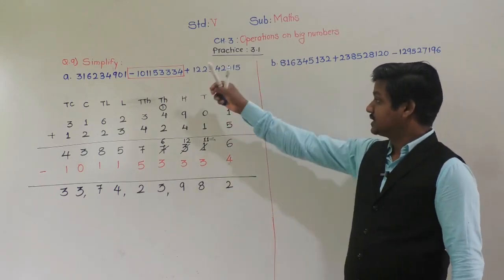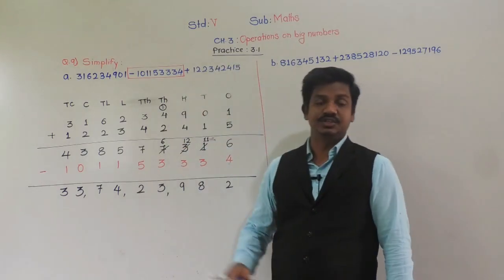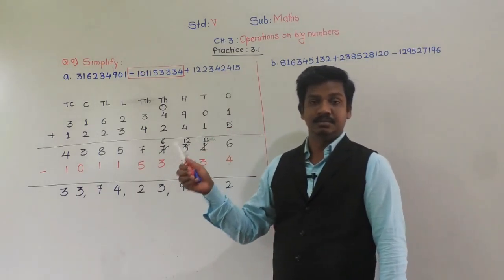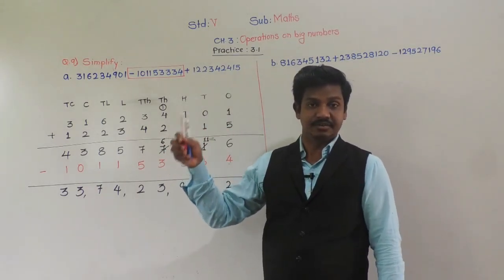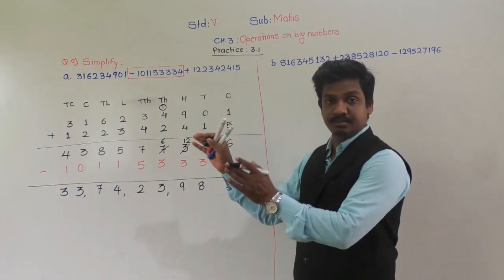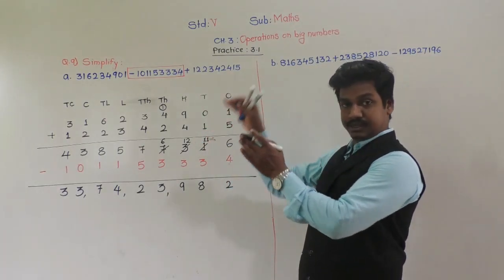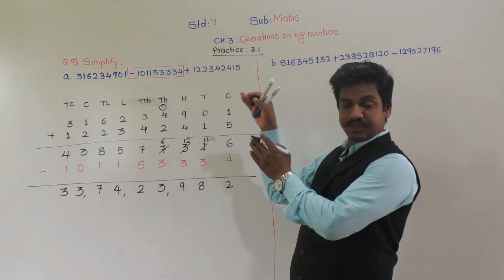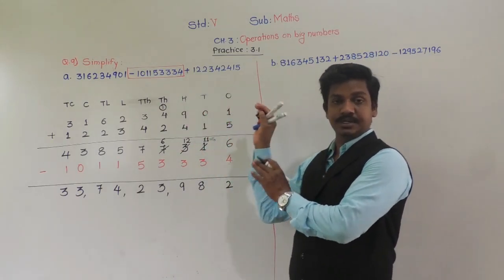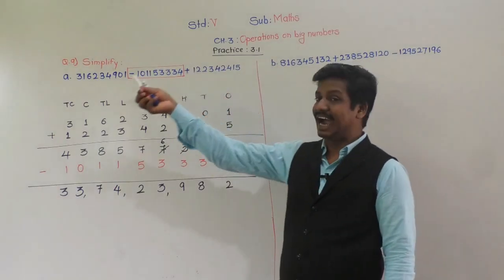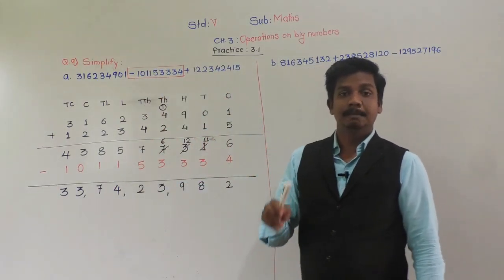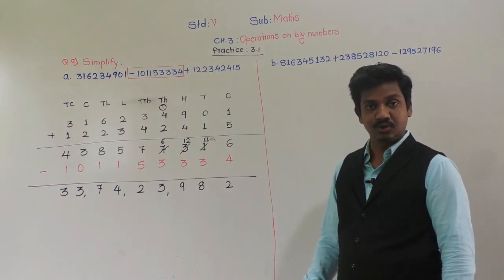Understood? In this simplification, the important thing is: the number which is negative — the number in front of which there is a minus sign — keep it separate, make a box around it so we know to subtract it later. First, we have to add the two positive numbers — the two numbers having plus sign in front of them.